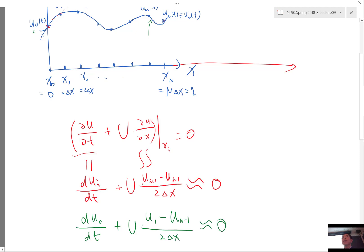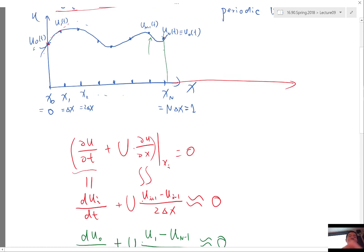So this is U minus 1 divided by 2 delta X approximately equal to 0. All right, does that answer your question? This is the periodic point, right? So this point is the same as this point.